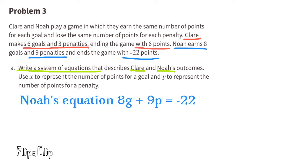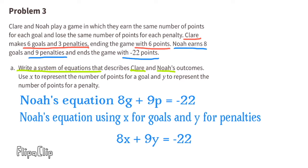Here's Noah's equation. 8G plus 9P equals negative 22. 8G represents his 8 goals, 9P represents his 9 penalties, and negative 22 represents the number of points he ended the game with. Here's a look at Noah's equation using X for goals, and Y for penalties.